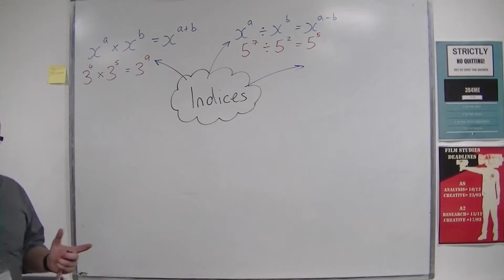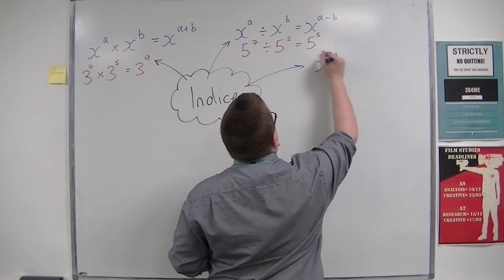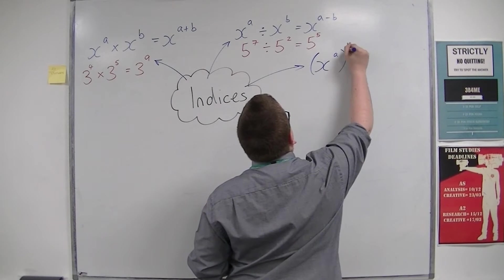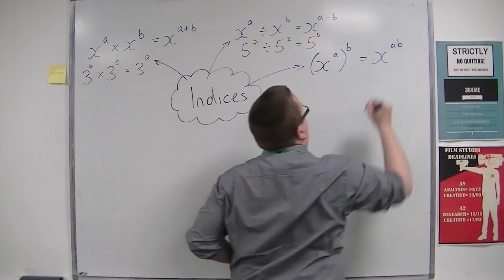Another law is that if you have x to the power of a all to the power of b, then this is x to the power of a times b.